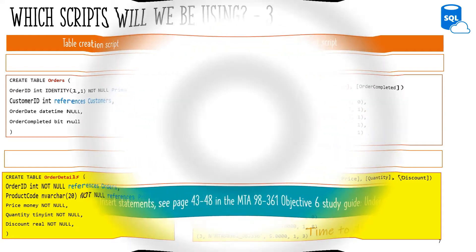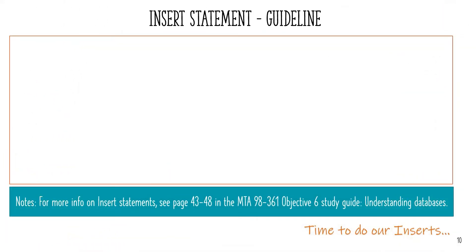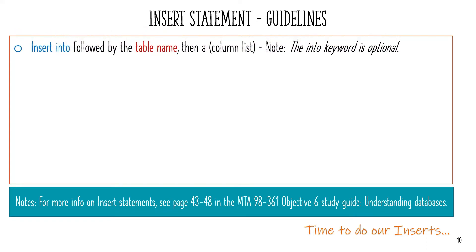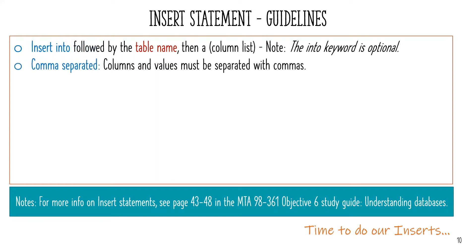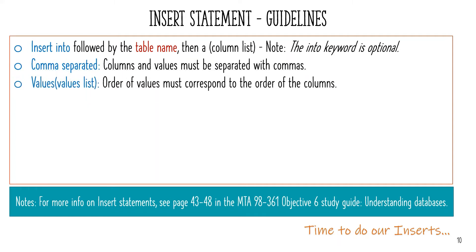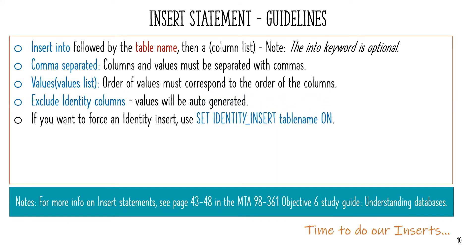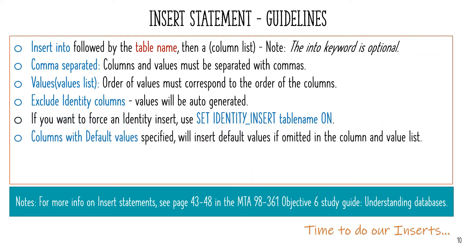Here are some guidelines for insert scripts. INSERT INTO followed by the table name, then a column list — the INTO keyword is optional. Columns and values must be separated with commas. The order of values in the values list must correspond to the order of the columns. Exclude identity columns, as values will be auto-generated. If you want to force an identity insert, use SET IDENTITY_INSERT ON. Columns with default values specified will insert default values if omitted in the column and value list.